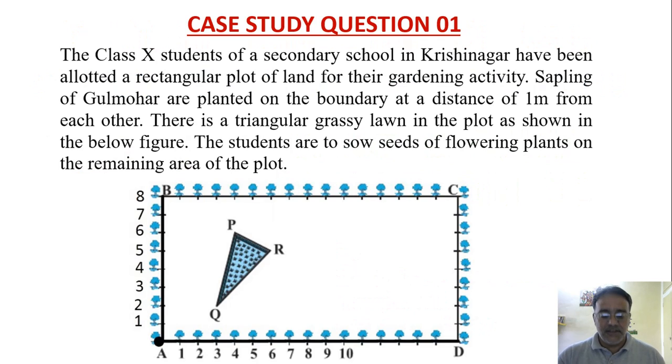The Class 10th students of secondary school in Krishinagar have been allotted a rectangular plot of land for their gardening activity. Sapling of gulmohar are planted on the boundary at a distance of 1 meter from each other. There is a triangular grassy lawn in the plot as shown in this figure, and the students are to sow seeds of flowering plants on the remaining area of the plot.